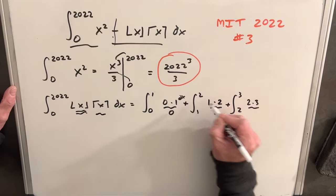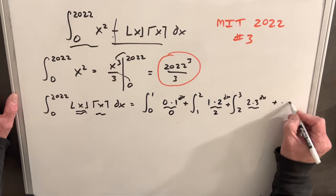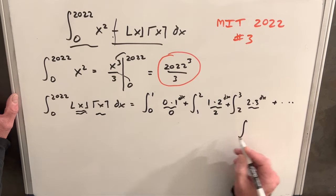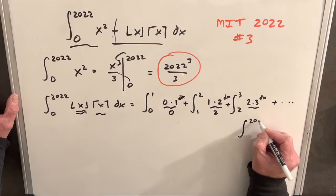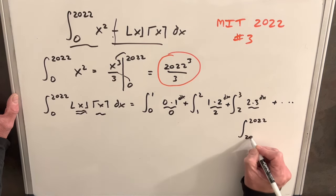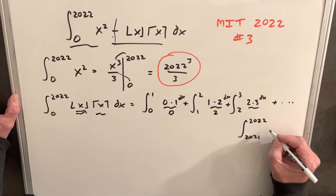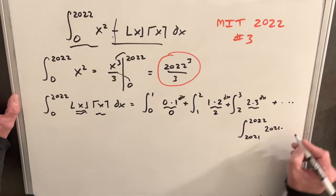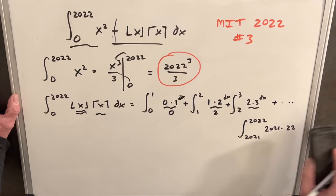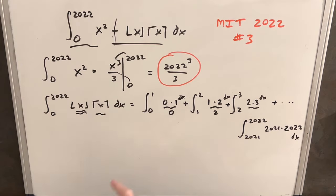Here will be our last term in this series, 2022 to 2021. The floor in that region is 2021, and our ceiling is 2022. Obviously, it's going to be tedious if we have to deal with 2,000 separate integrals. So what I want to do is find some way to simplify this.